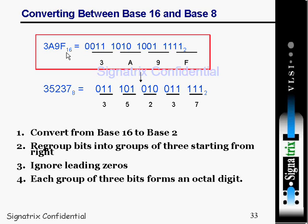To summarize the steps to convert from base 16 to base 8: first, convert the hexadecimal number into binary. Second, regroup the bits into groups of 3 starting from the right (LSB side). Third, ignore any leading zeros. Finally, each group of 3 bits forms one octal digit.